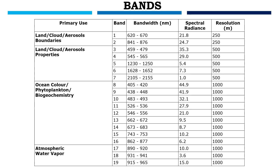For ocean color, phytoplankton, and biogeochemistry, we use bands 8 to 16, which are 1000-meter resolution bands. For atmospheric water vapor, we use bands 17 to 19, which also have 1000-meter spectral resolution.